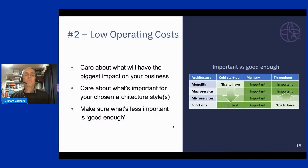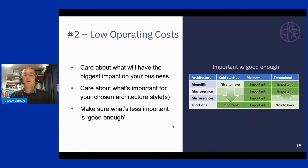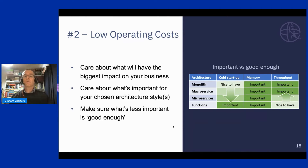Next: low operating costs. We focus very hard on making Liberty a very efficient runtime — the combination of Liberty and OpenJ9. It's important to think about what performance characteristics are important for your applications. We've got three characteristics here: cold startup, memory footprint, and throughput.